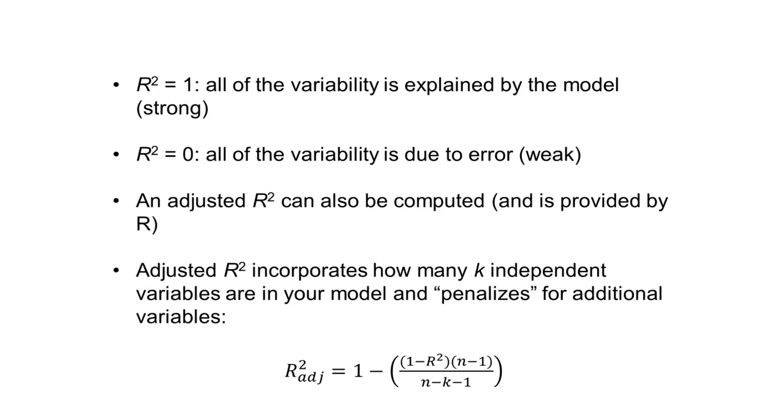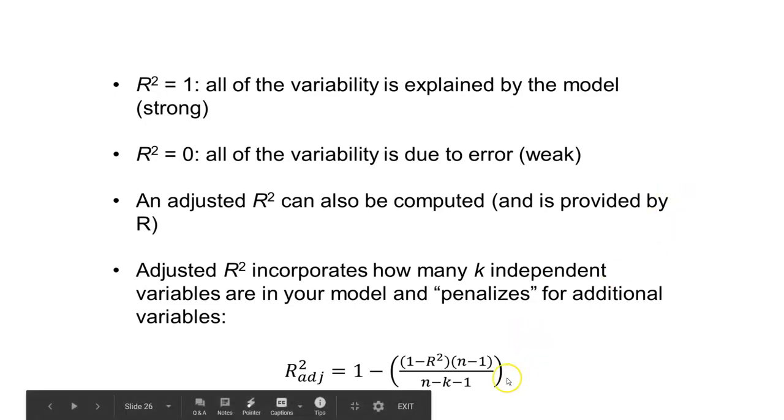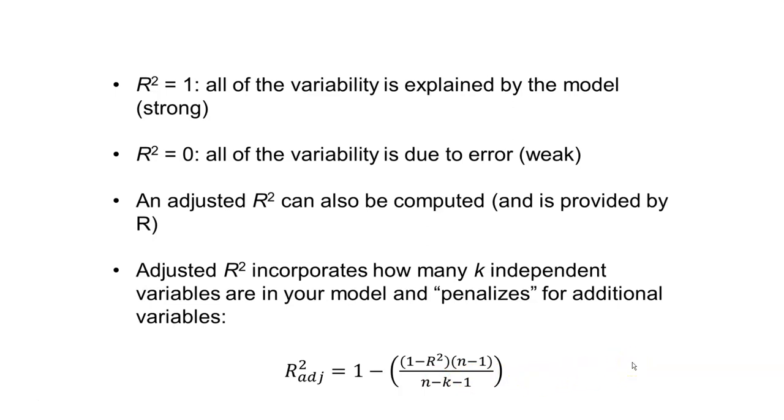If you have a large value for K, if K is large and it's in the denominator, it's going to make this value smaller. The adjusted R squared incorporates how many different variables are in the model and it will penalize you for additional variables.